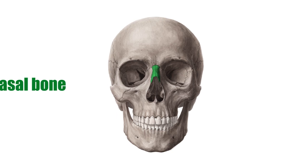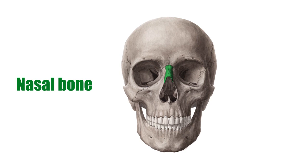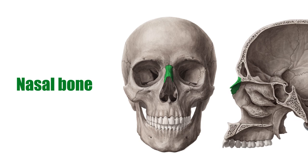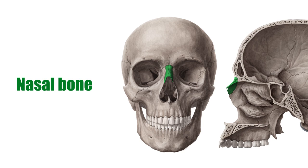The nasal bones are two small bones of the mid-face which build the bridge of the nose. The nasal bone is a bilateral symmetrical paired bone. Their superior borders and main bodies form the bridge of the nose, while the inferior borders connect with the nasal cartilage to form the superior margin of the nasal aperture.